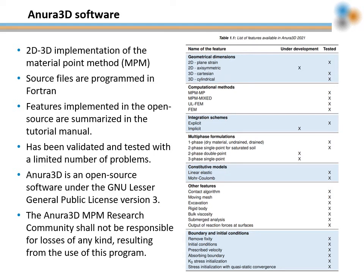Now, let's introduce the basic characteristics of the Anura3D software. Anura3D is a 2D and 3D implementation of the material point method. Different formulations are implemented for the simulation of the physics involved in soil-water structure interaction problems involving large deformations. The source files are programmed in Fortran. The features implemented in the source code are summarized in the tutorial manual in a table as shown here on the right. Note that we distinguish between those features that have been validated and tested with a limited number of problems, and those other features that are under development. The Anura3D source files are open source under the GNU Lesser General Public License version 3. The Anura3D NPM research community shall not be responsible for losses of any kind resulting from the use of this program.